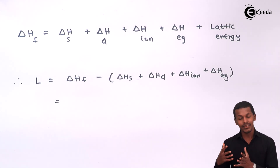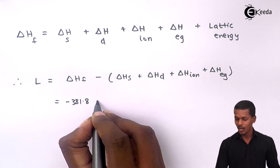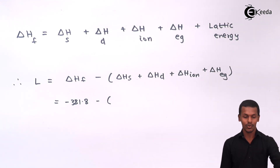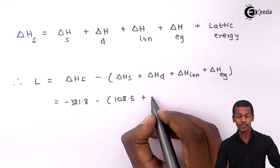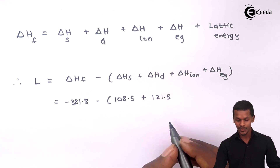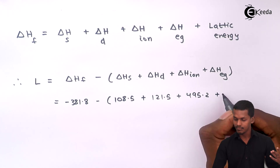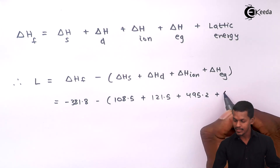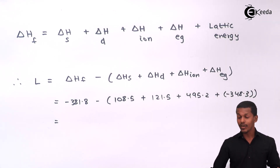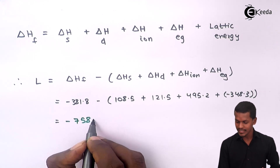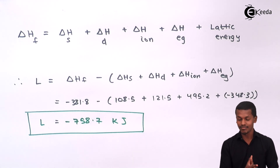We can calculate the lattice energy numerically. Delta H of formation = minus 381.8 kJ; delta H of sublimation = 108.5 kJ; dissociation energy = 121.5 kJ; ionization energy = 495.2 kJ; electron gain enthalpy = minus 348.3 kJ. Combining these values, the lattice energy between sodium ion and chloride ion is found to be minus 758.7 kJ.